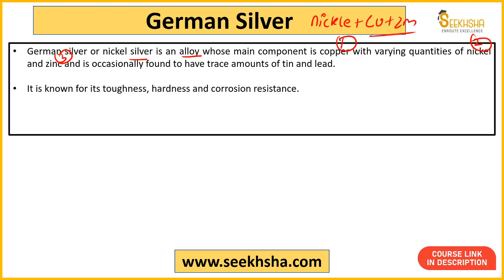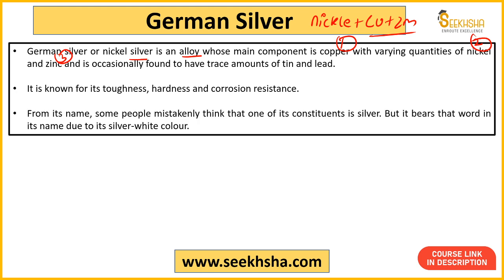German silver apni toughness, hardness, aur corrosion resistance ke liye jaana jaata hai. Isko German silver isliye bola jaata hai kyunki silver white color hota hai aur yeh bhi kaafi shiny look deta hai. Iska na Germany se koi lena dena hai, na German logo se, aur na hi chaandi se kuch lena dena hai.